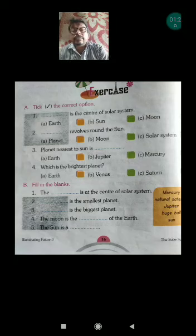The dash is the center of solar system. In tick the correct option there may be a question. In fill up there may be a question. The answer will be the Sun as the center of the solar system.